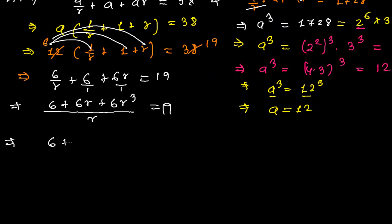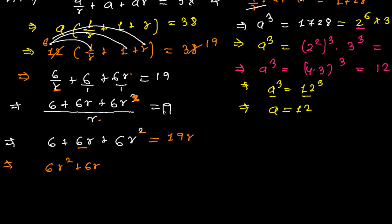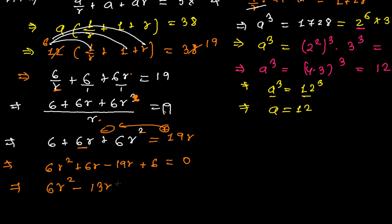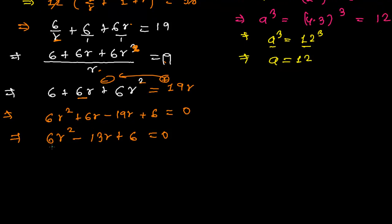Rearranging: 6r² + 6r − 19r + 6 = 0, which gives 6r² − 13r + 6 = 0. To factor this, I need two numbers whose product is 6×6 = 36 and whose sum is −13.